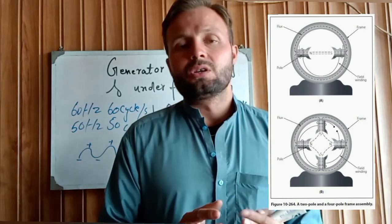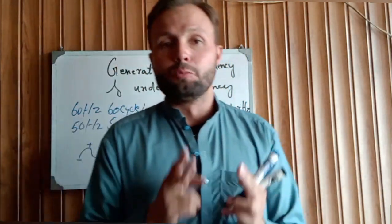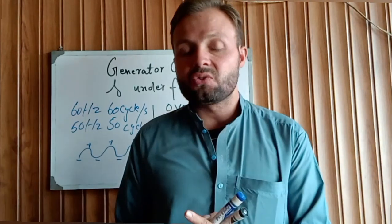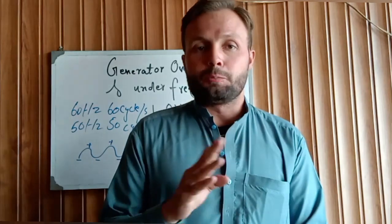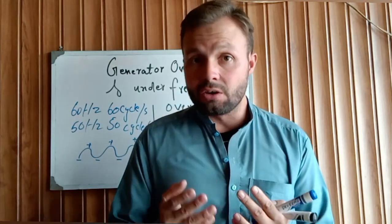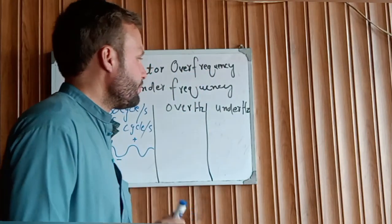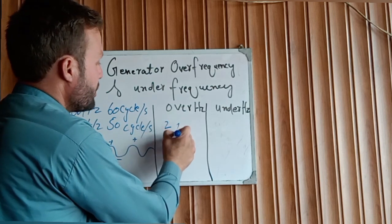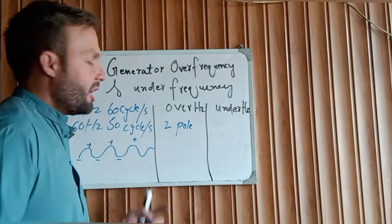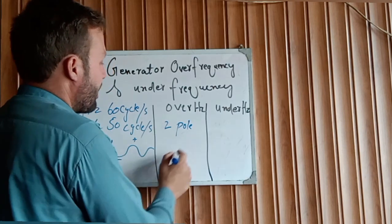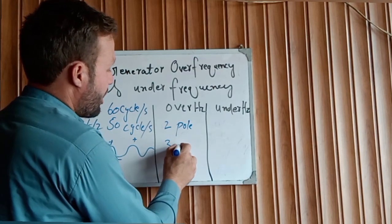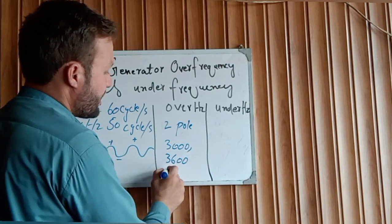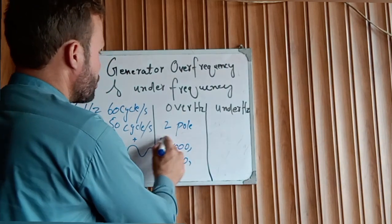Most of the time, 60 Hz generators have two poles and 50 Hz generators have four poles. The speed is adjusted to change the frequency of the generator. For example, with a two-pole generator at 50 Hz, you need to increase the engine RPM to reach 3000 RPM, or 3600 RPM for 60 Hz, to produce the required power.